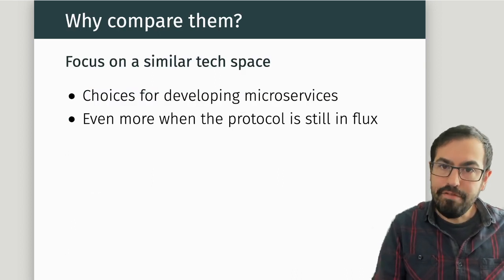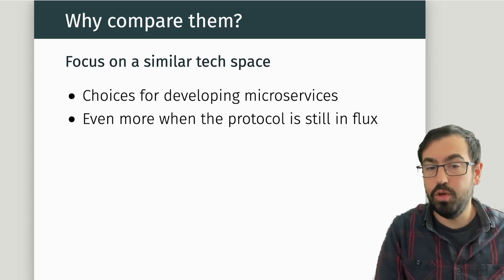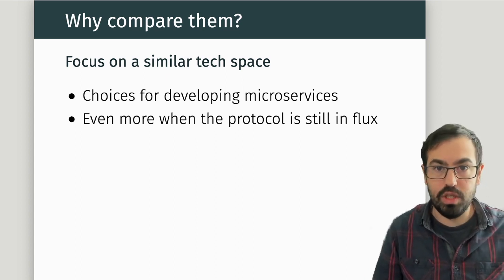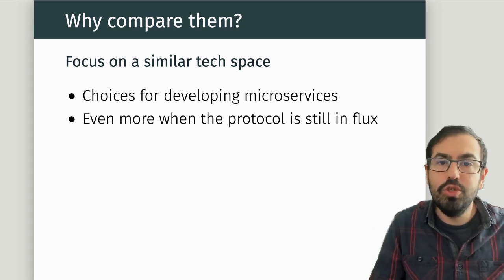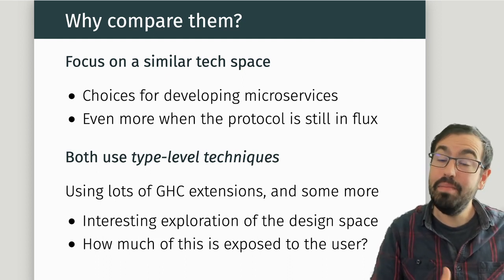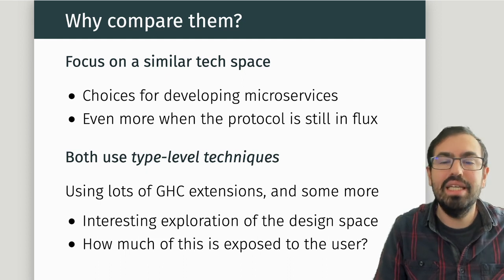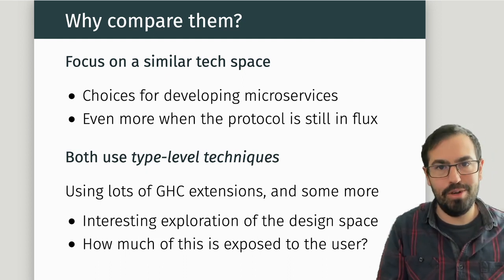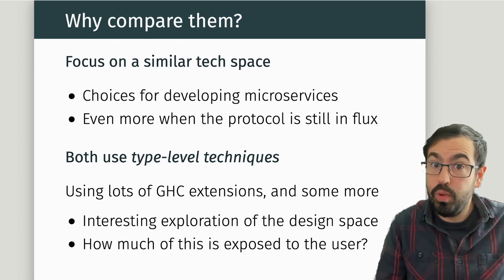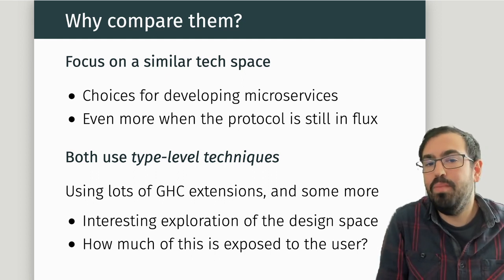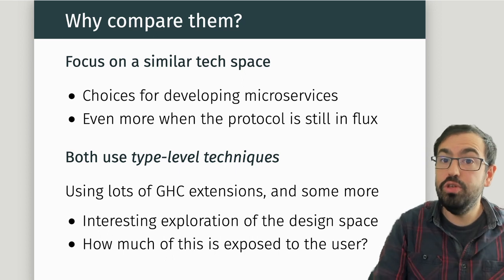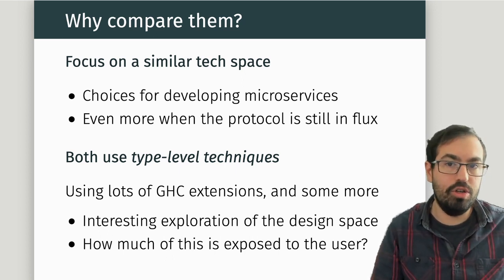They focus on a very similar tech space. If you are developing a service or microservices in your company and you don't know yet which protocol you want to use, these are two natural options. More importantly, we're going to compare them because they both use a lot of type-level techniques available in newer versions of Haskell — every possible GHC extension and some more. I find this an interesting exploration of the design space: what do we do when we have strong types, and how much of this is actually exposed to the user?